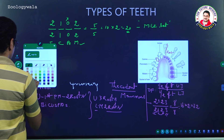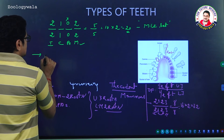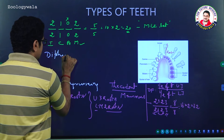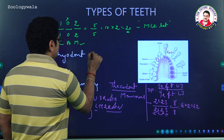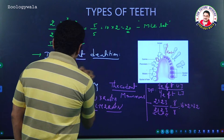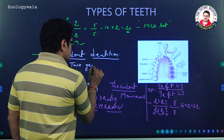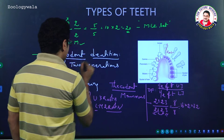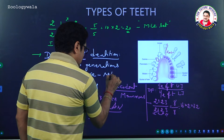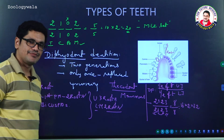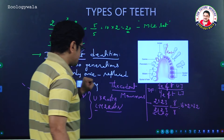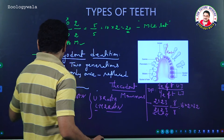Because two generations of teeth are observed, human beings show diphyodont dentition — D-I-P-H-Y-O-D-O-N-T. Diphyodont dentition means two generations of teeth are seen, or that teeth are replaced only once in a lifetime. That is the reason why in human beings we use the term diphyodont dentition.